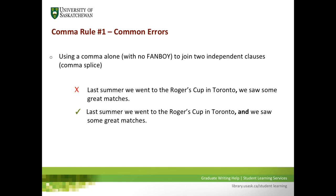A common error students make when trying to apply rule number one is using a comma alone — but no FANBOY — to join two independent clauses. This is known as a comma splice, and it is a serious grammatical error. For example: 'Last summer, we went to the Rogers Cup in Toronto, we saw some great matches.' You cannot join two independent clauses with a comma alone; you must use a FANBOY with the comma.